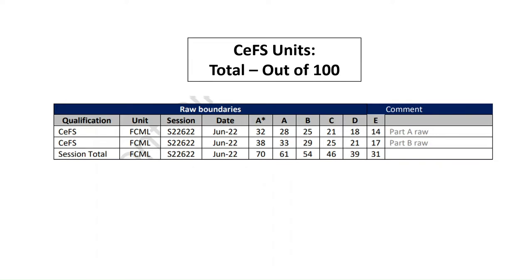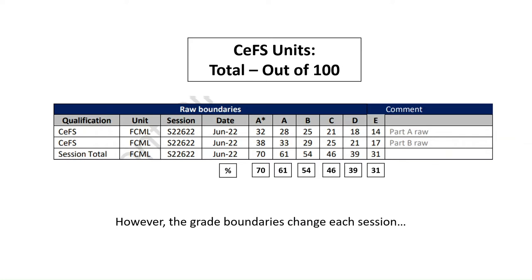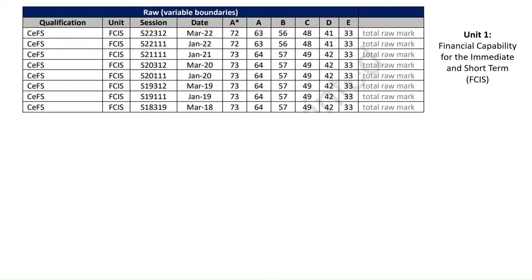For an A star in June 2022, you needed 70 marks out of 100, equivalent to 70%. A was 61, B was 54, and so on. Bear in mind this was the June 2022 Unit 2 paper. The grade boundaries are likely to change each session, and we can see this looking at the history of the grade boundaries.